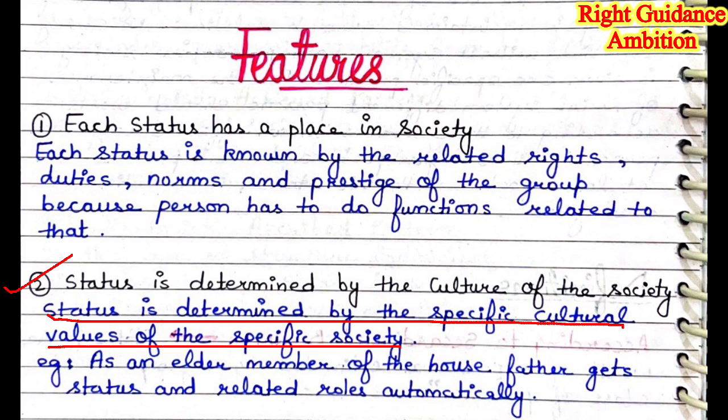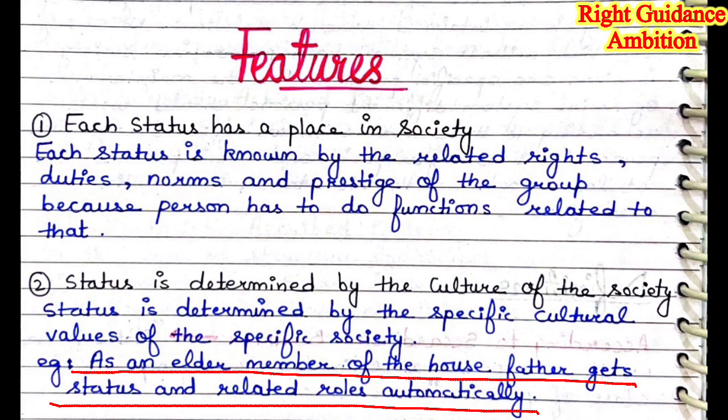Second point: status is determined by the culture of the society. In whichever society we live, our status is shaped by the culture of that society. For example, as the elder member of the house, the father gets status and related roles automatically. The male elder member of the house has a main role in decision-making, and important family decisions are taken by the father. This means that in our culture, the male member dominates — the status of the male is higher than that of the female. Whatever status is given in society, it is given according to the culture of the society.